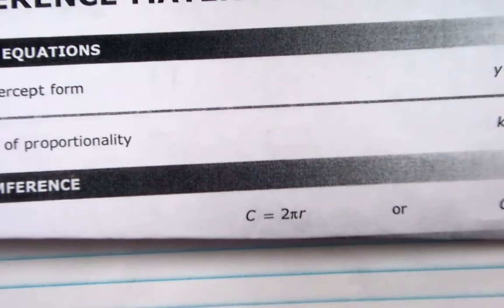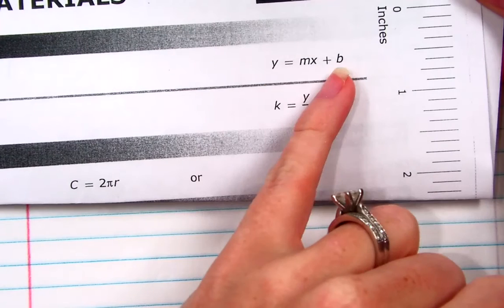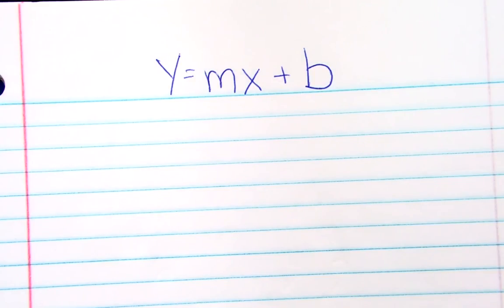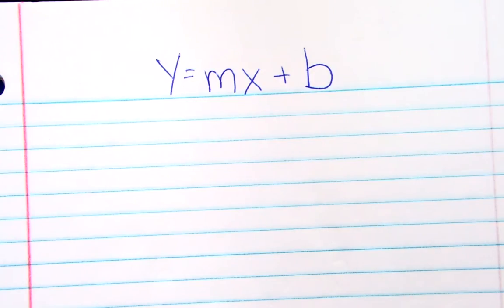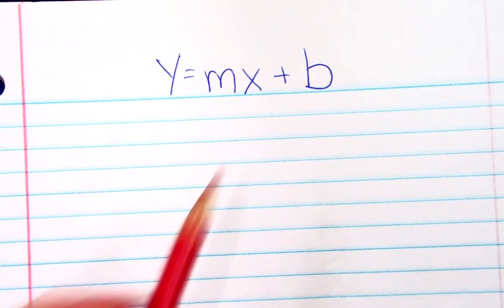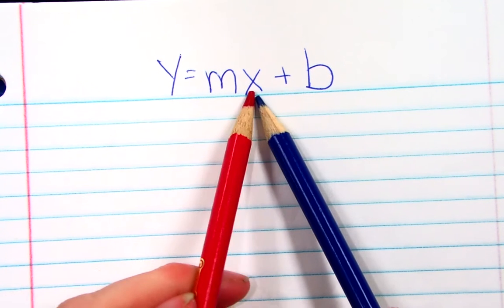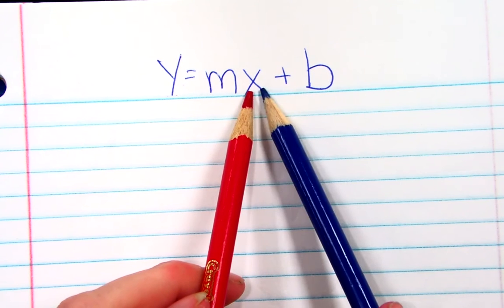On our reference chart, it's going to have that at the very top — slope-intercept form, y equals mx plus b. You don't have to memorize this, but we do want to know what those mean. The key is this is an equation we can use to find any value of x if I know y, or any value of y if I know x.